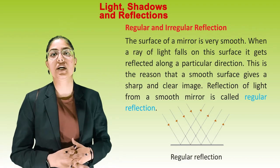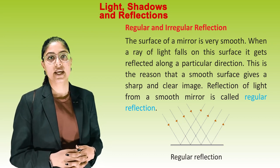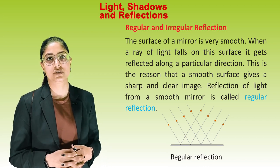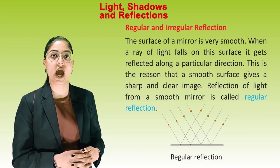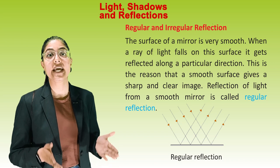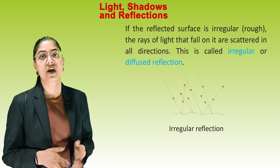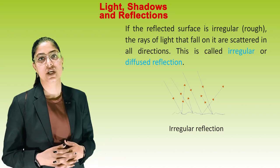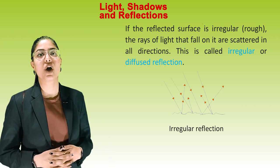Regular and irregular reflection. The surface of a mirror is very smooth. When light falls on the surface, it gets reflected along a particular direction. This is why a smooth surface gives a sharp and clear image — reflection of light from a smooth mirror is called regular reflection. If the reflecting surface is irregular or rough, the rays of light that fall on it are scattered in all directions. This is called irregular or diffused reflection.